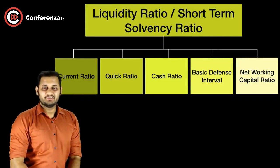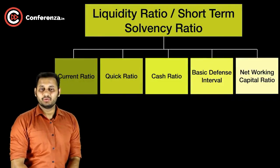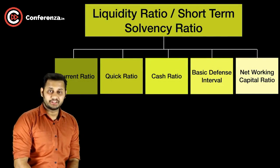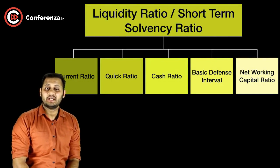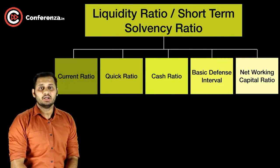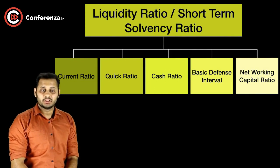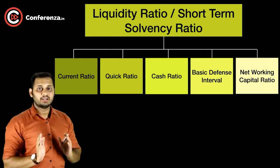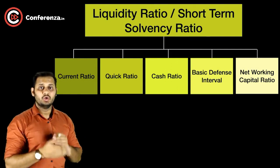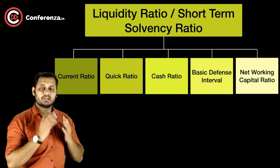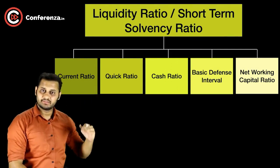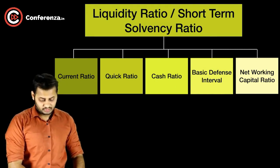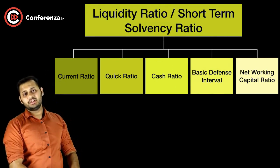Hi everyone, this is Mayanko Thariya, and once again we are going to discuss liquidity and short-term solvency ratios. In the previous video, we saw what the current ratio is — current ratio means whether we have enough current assets available to fulfill our current liabilities. The formula is: current assets divided by current liabilities.